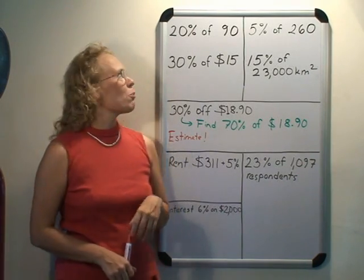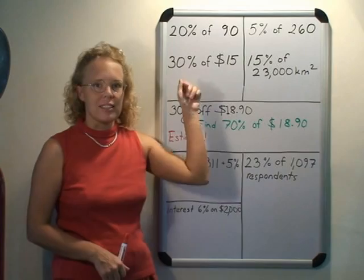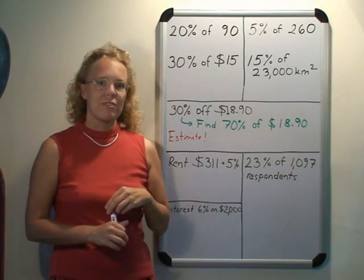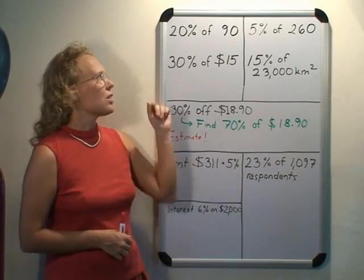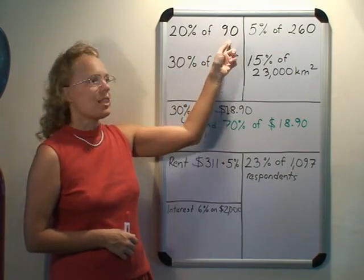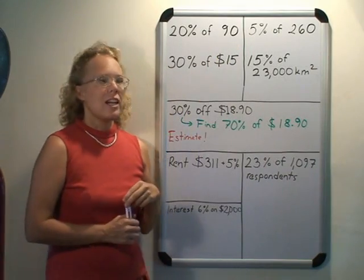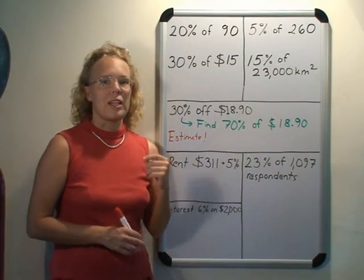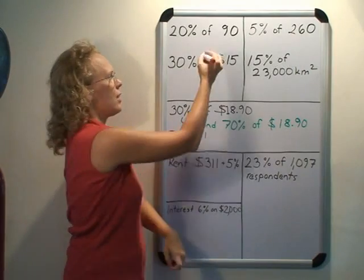Let's look at some examples. First, we'll find 20% of 90. We find 10% of 90 first, which is 90 divided by 10 = 9. Then 20% of 90 is double that — double 9 — which is 18.